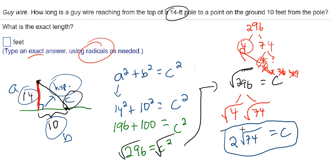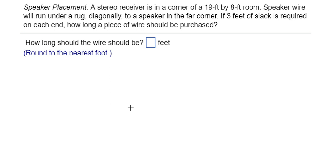So 2 square root of 74 is the answer they want. It's not a very familiar answer — how far is 2 square root of 74? That's an unusual number, but that's the way they want the answer for this problem. Alright, let's take a look at another example.